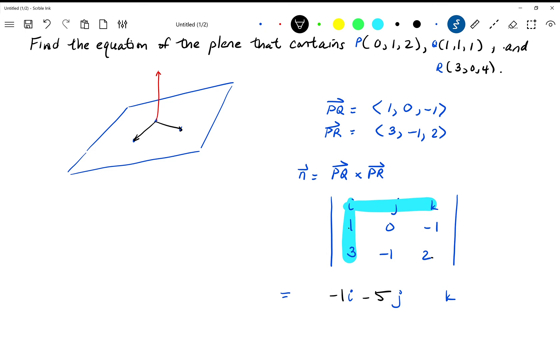And for the k component, we take one times negative one, which is negative one, minus zero, so it's minus one. So we basically have the vector negative i minus five j minus k, so all negatives.